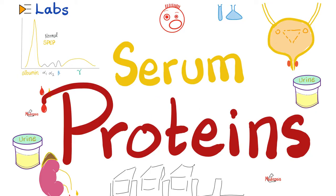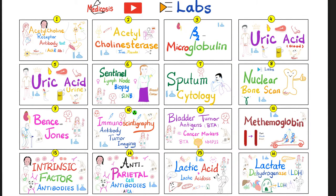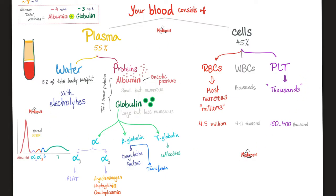Plasma proteins are either albumin or globulin. Albumin is more abundant; globulin is larger in size. Your blood consists of plasma and cells. The plasma is made of water and proteins — either albumin or globulin. Albumin is more abundant but small; globulin is larger but less abundant. If I add albumin and globulin together, I get total serum protein. With normal albumin at about 4 mg/dL and globulin at about 3, that gives 7 grams per deciliter of total serum proteins.